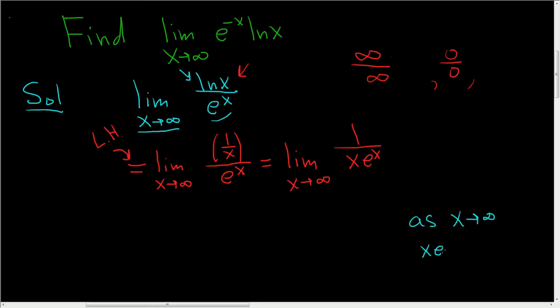x e to the x also approaches infinity. So you have 1 over something that's getting really, really, really, really big. So this is 0.